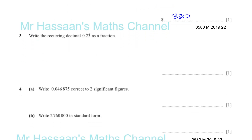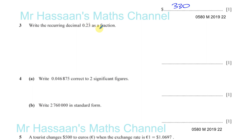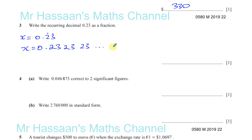It says write the recurring decimal 0.23 with dots on the 2 and 3 as a fraction. One method is to say x equals 0.232323... continuing like that. We need two equations with x where the pattern 2, 3, 2, 3... starts right after the decimal point. You don't want an odd 2 or 3 out of position, so we use this expression as one of our equations since it starts correctly with the pattern after the decimal point.